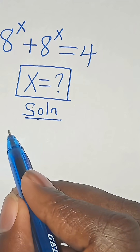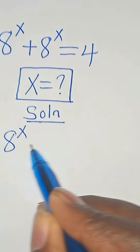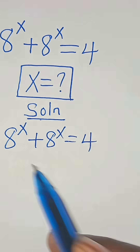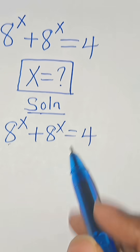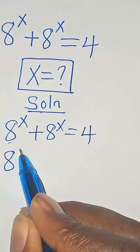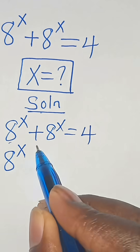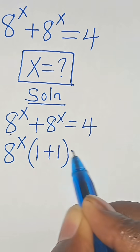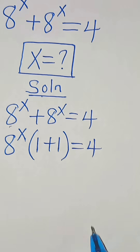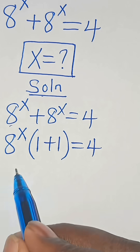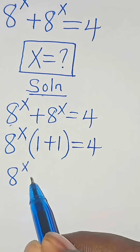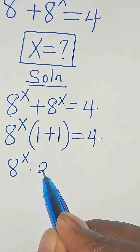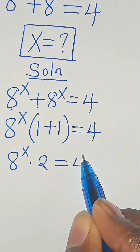We have 8 to the power of x plus 8 to the power of x, this is equal to 4. Since 8 to the power of x is common here, we factor out 8 to the power of x so that we have 1 plus 1, this is equal to 4. So now we have 8 to the power of x multiplied by 1 plus 1, which is 2, and this is equal to 4.